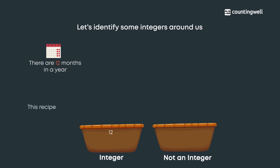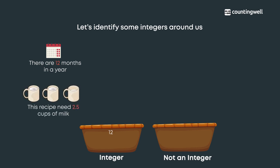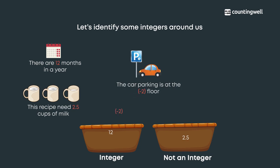This recipe needs 2.5 cups of milk — 2.5 is not an integer. The car parking is at the minus 2 floor — minus 2 is an integer. This car costs rupees 12 lakh 48 thousand — 12 lakh 48 thousand is an integer.